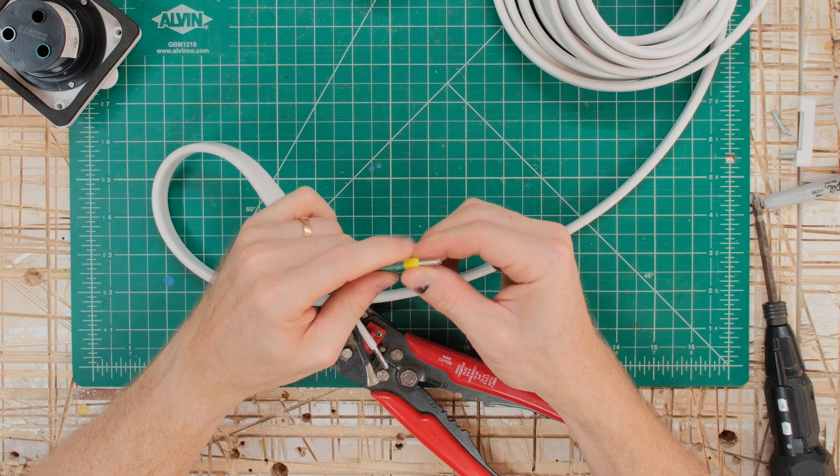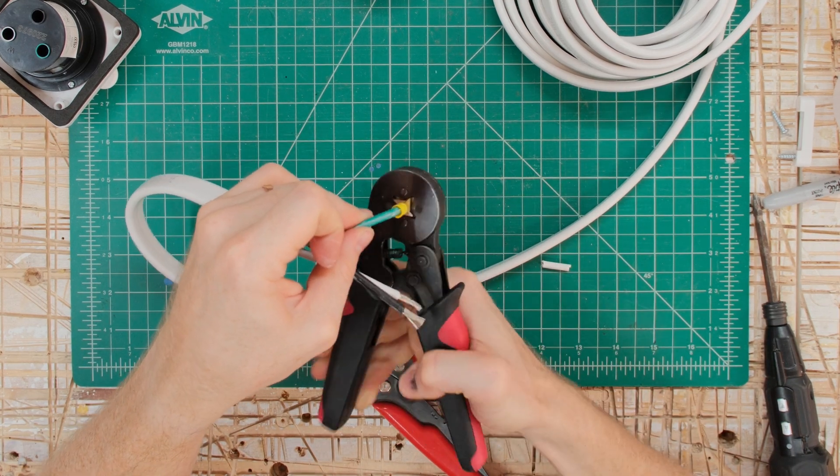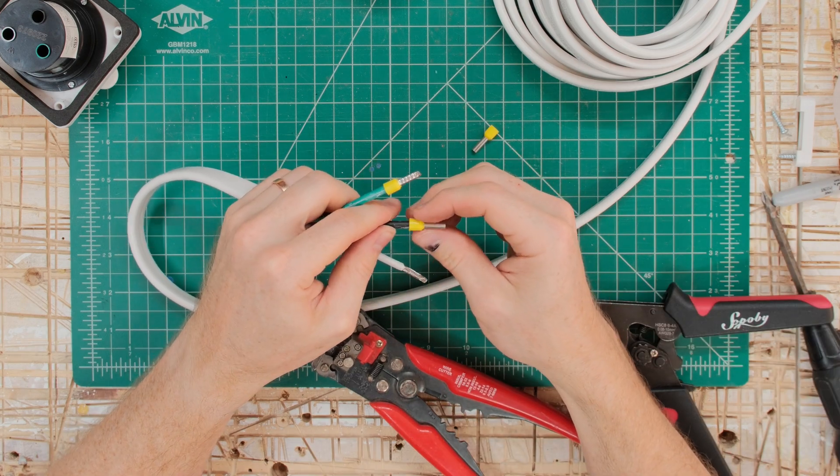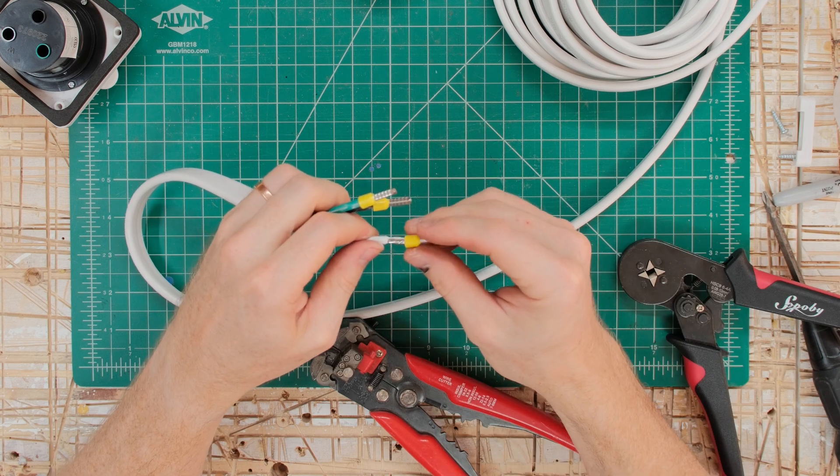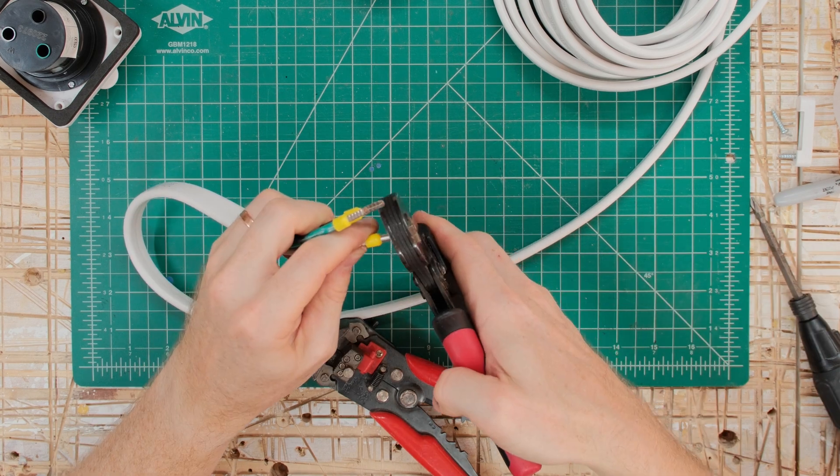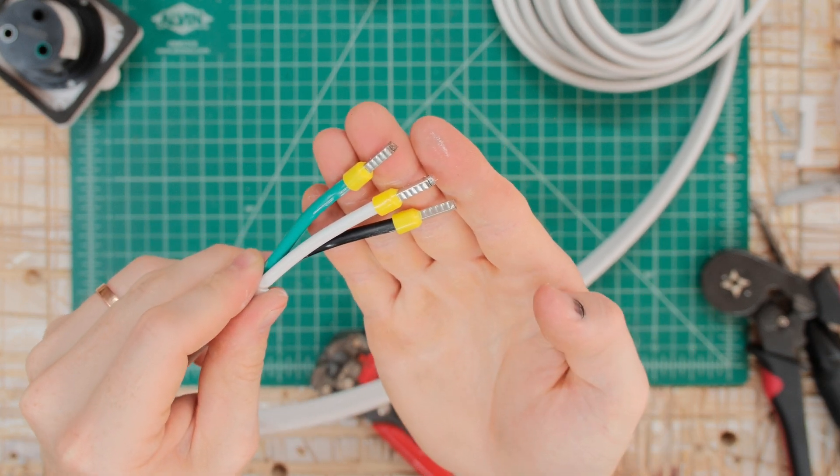Next, I'll crimp on ferrules to the end of each wire. The purpose of the ferrule is to keep the ends of the stranded wire together as they feed into the terminals on the shore power inlet. The ferrules are easy to crimp on, but you do need the right size ferrule and the right tool. I'll link to those and other tools I've used during this video in the description below.